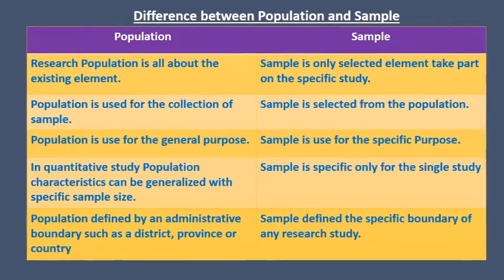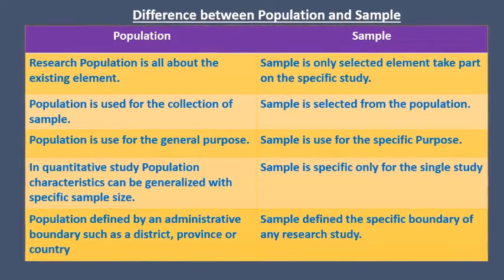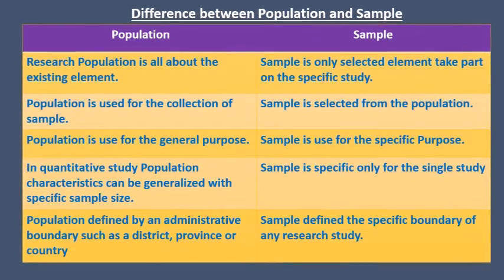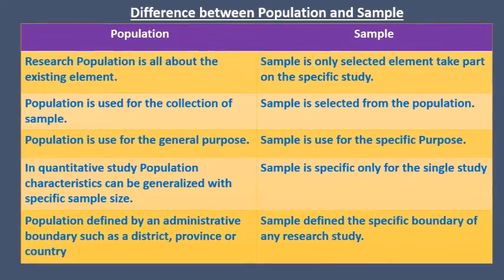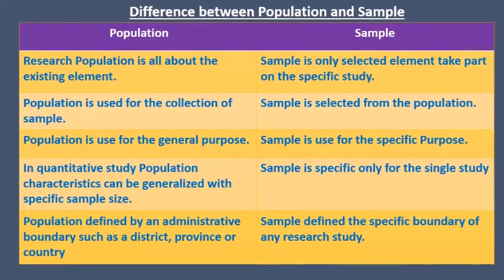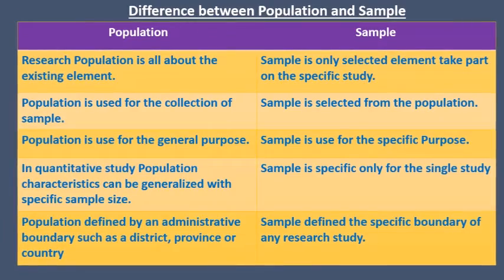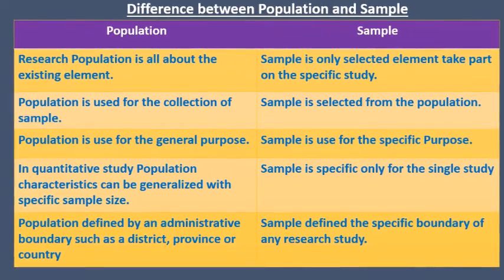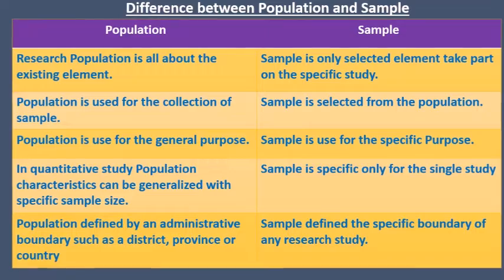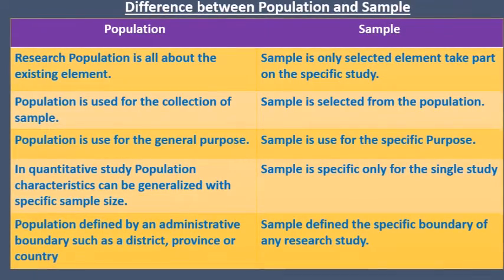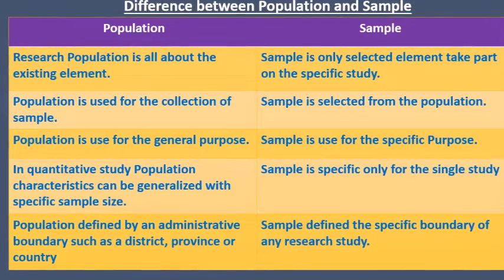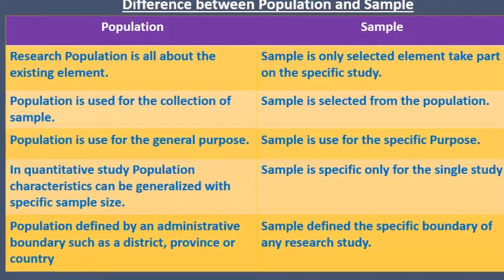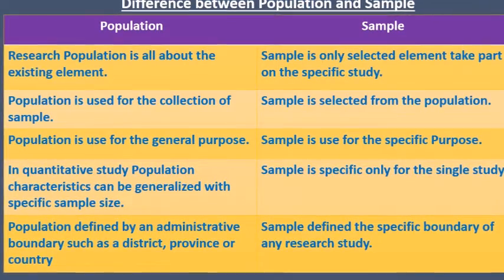Point number four: what is the difference between population and sample? First, a research population consists of all existing elements, while a sample is only the selected elements that take part in a specific study. Second, the population is used for the collection of a sample, while the sample is selected from the population. Third, population is used for a general purpose, while sample is used for a specific purpose.